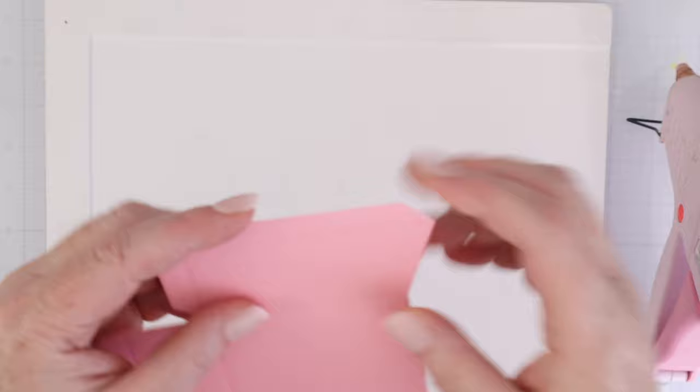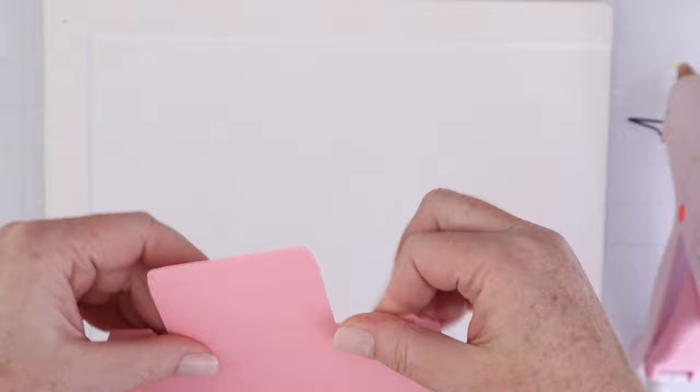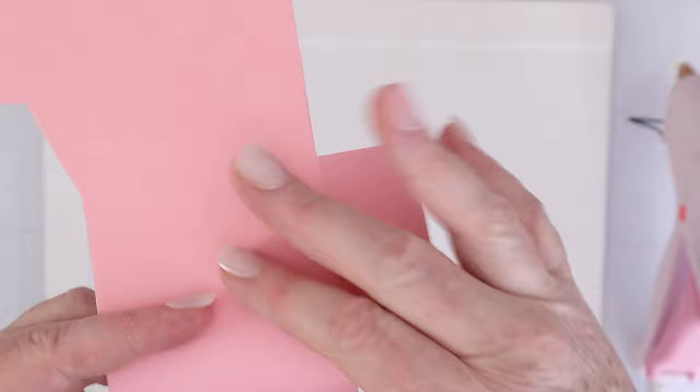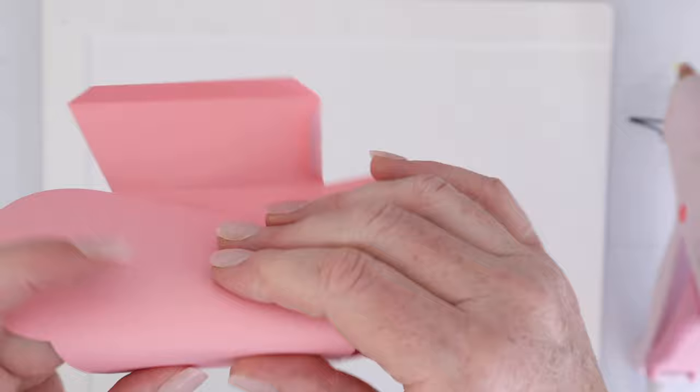It's got all the score lines, everything you need on this one piece to create the main box shape. So as you can see, I am folding in all the score lines, and I'm folding them all in towards the center. I am not using a bone folder, but you could in this instance to get a nice crisp fold.